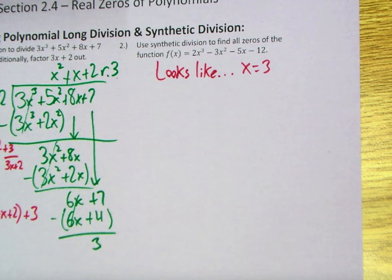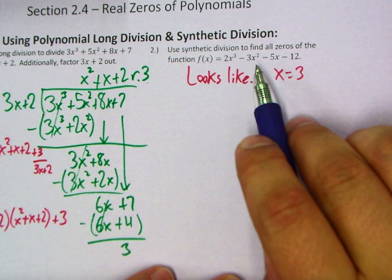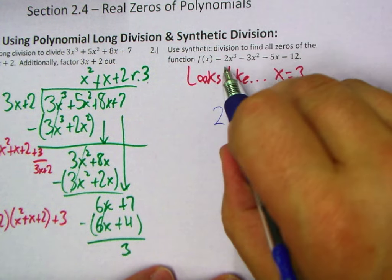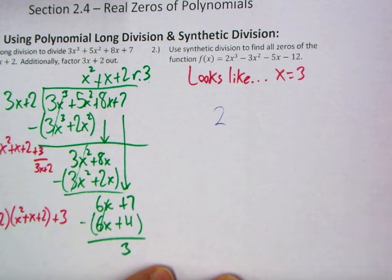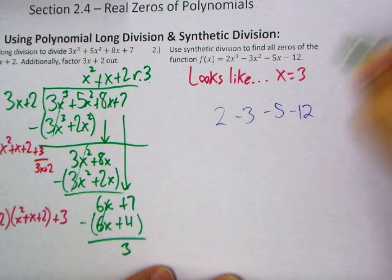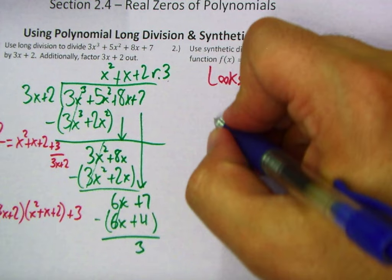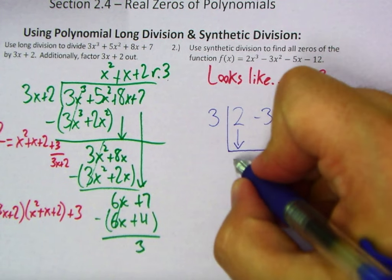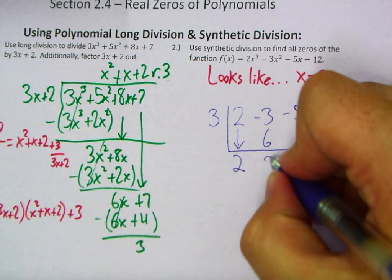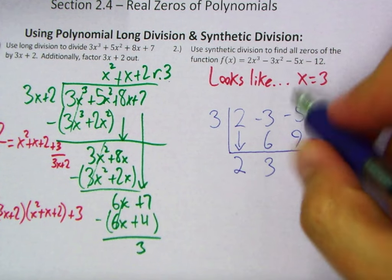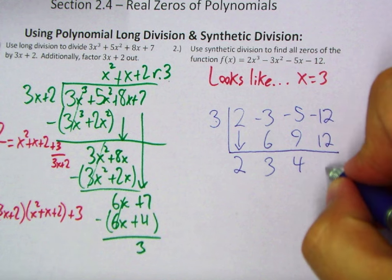Let's test x equals 3 using synthetic division. Just like with long division, we want to make sure we don't need any placeholders. We look at the coefficients: 2, negative 3, negative 5, and negative 12. Draw an inverted division box and put 3 on the outside. We always drop down our first coefficient — drop down 2, multiply by 3, get 6. Negative 3 plus 6 is 3. Multiply by 3, get 9. Negative 5 plus 9 is 4. Multiply by 3, get 12. Add: negative 12 plus 12 gives us 0.